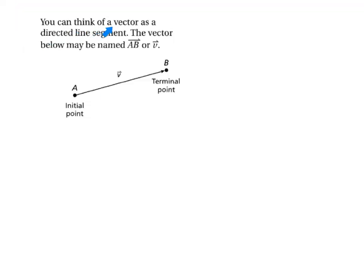You can think of a vector as a directed line segment. The vector below may be named vector AB or just vector V. Here's our initial point, and here's where we end up, which is our terminal point — that's where we stop.